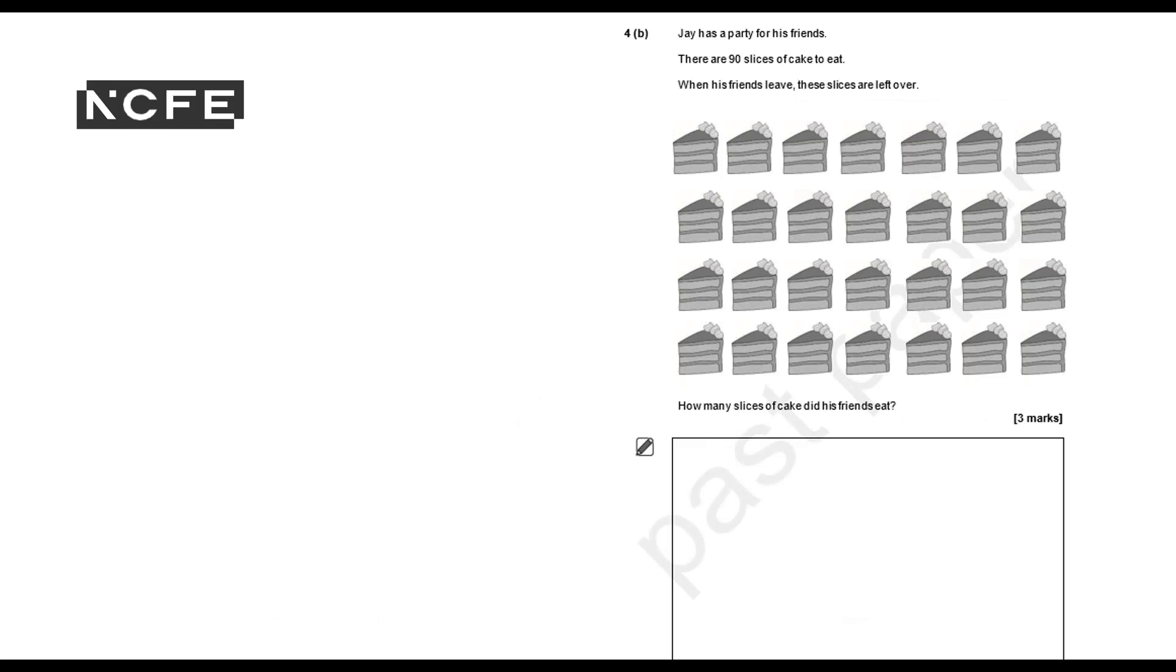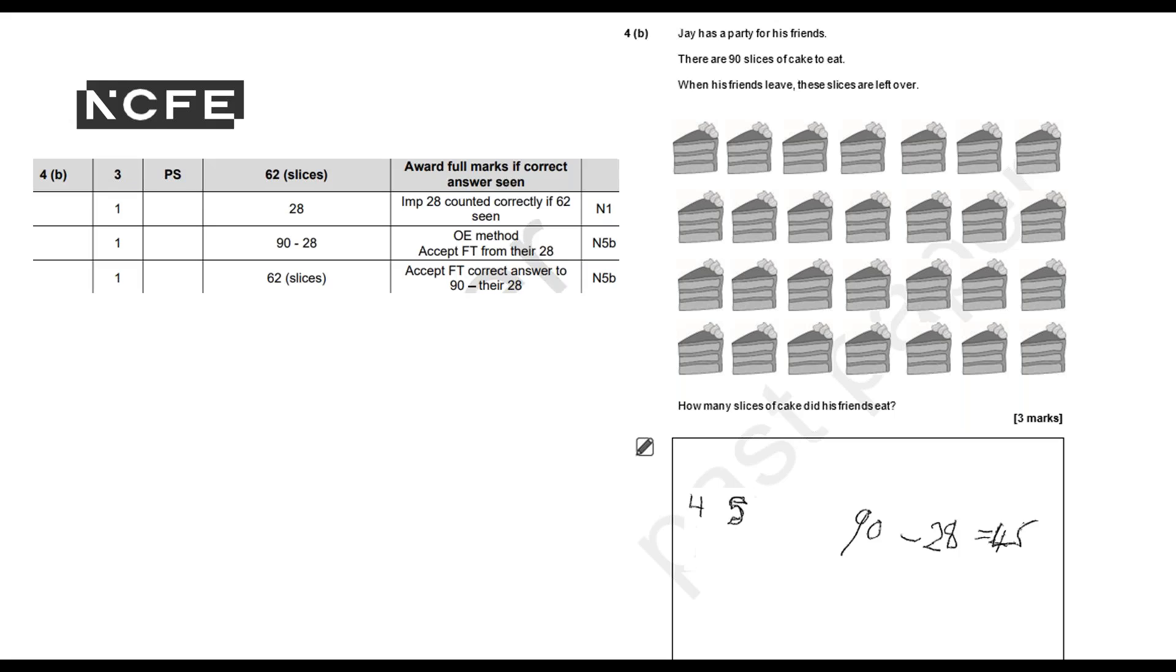4B: Jay has a party for his friends. There are 90 slices of cake to eat. When his friends leave, these slices are left over. How many slices of cake did his friends eat? So here's the learner's answer. You can decide how many marks you would give for this answer.